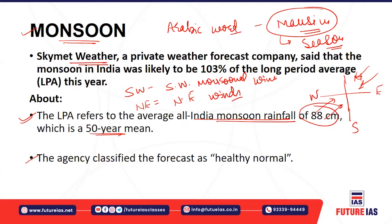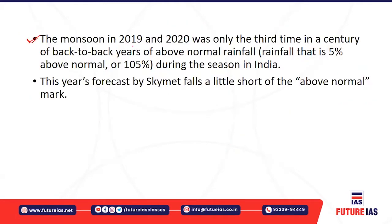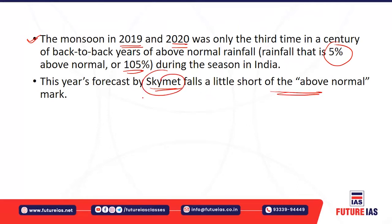The LPA or long period average is the all-India monsoon rainfall of 88 centimeters, which is the 50-year mean. Skymet has forecasted this as a healthy rainfall. As you know, the monsoon in 2019 and 2020 was also surplus, so we have back-to-back surplus monsoon. This year would be the third back-to-back above-normal monsoonal regime — in 2019 and 2020 rainfall was 105 percent of the long period average.